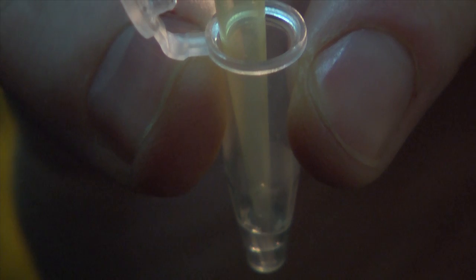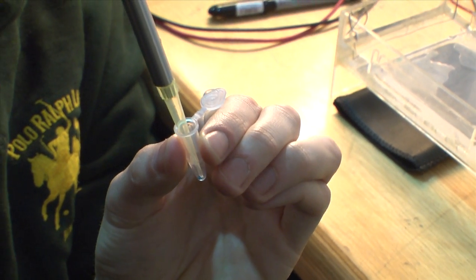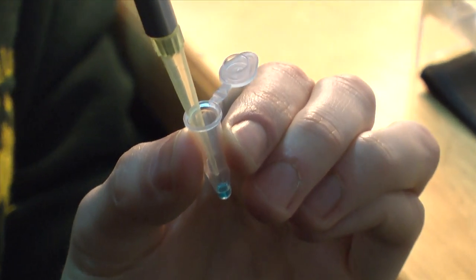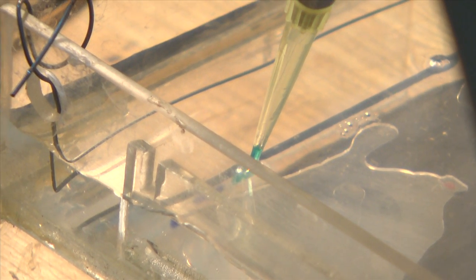So I'm going to add 15 microliters of each sample, and I'm going to add it to 3 microliters of loading buffer, which is in here already, and then take another 15 of that, and put it in the gel.